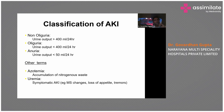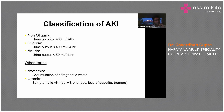Azotemia means accumulation of uremic toxins such as urea and creatinine, causing problems like encephalopathy when they accumulate in the brain. The uremic symptoms — mental status changes, loss of appetite, tremor, nausea, vomiting, and neuropathy — are the final manifestations of AKI.